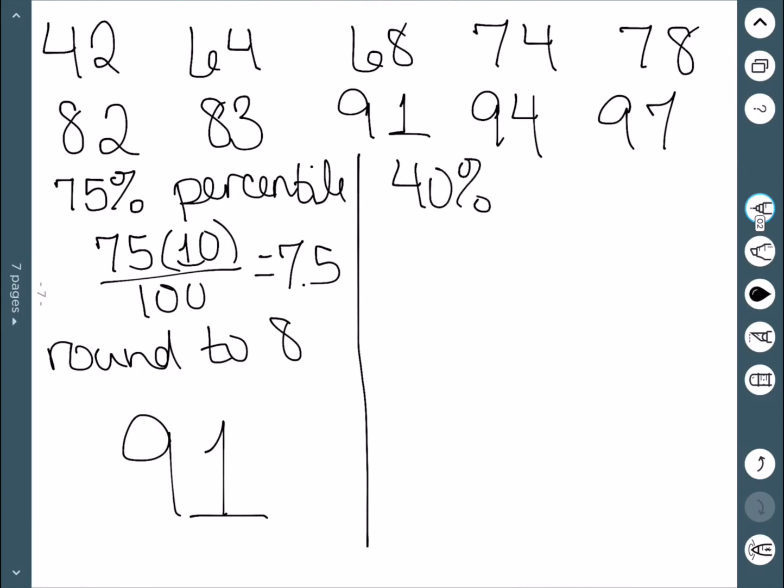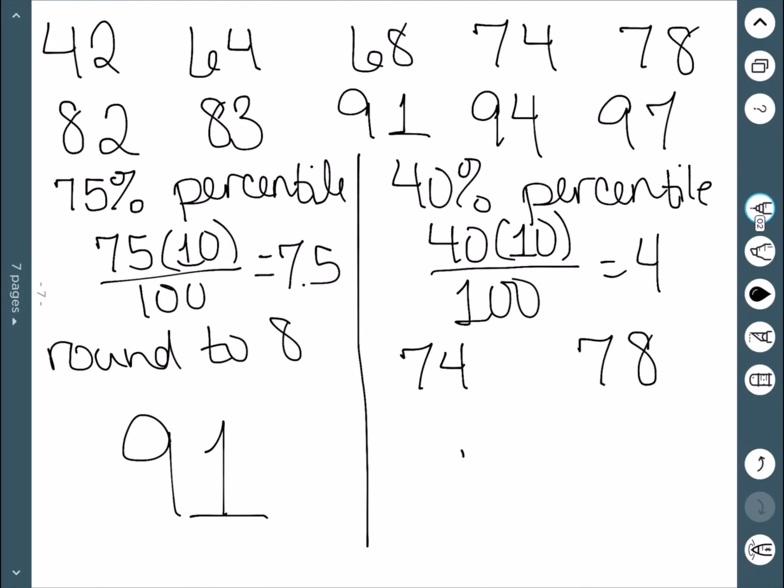On the other hand, if I wanted to find the 40th percentile, I would multiply 40 by the fact that there are 10 data values and divide by 100 to get 4. In this case, I look at the 4th data value, which is 74, and the 5th data value, which is 78, and I find the number halfway in between, which in this case would be 76.